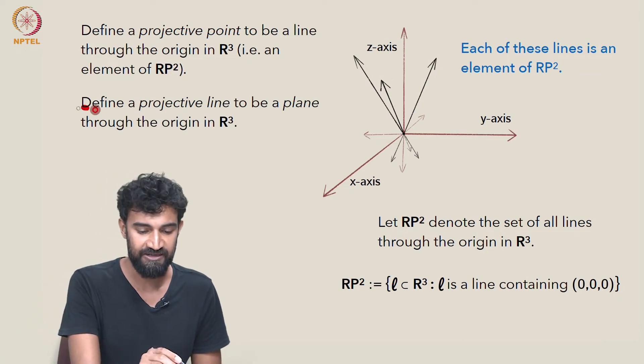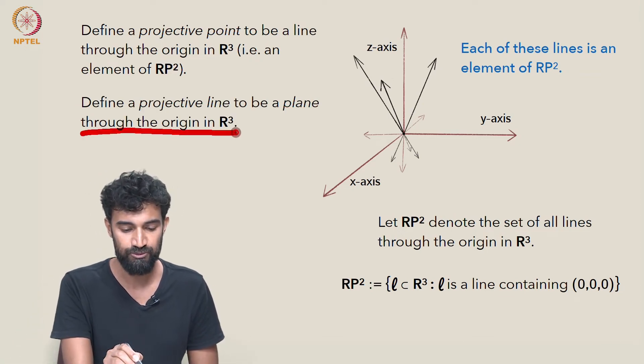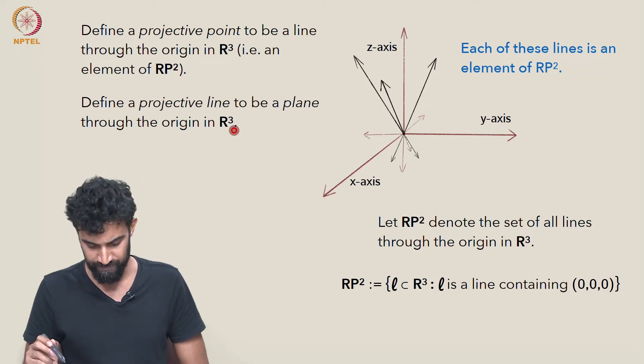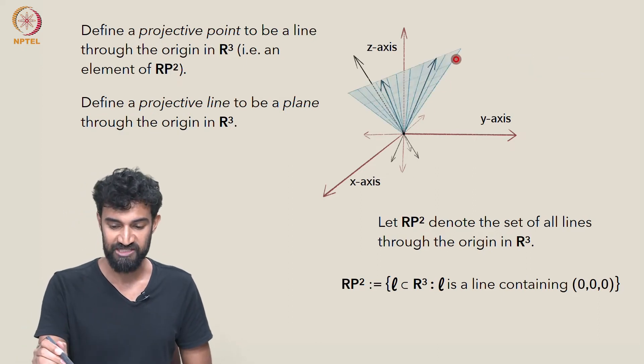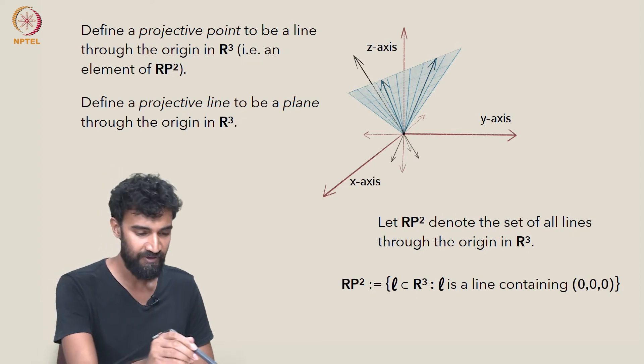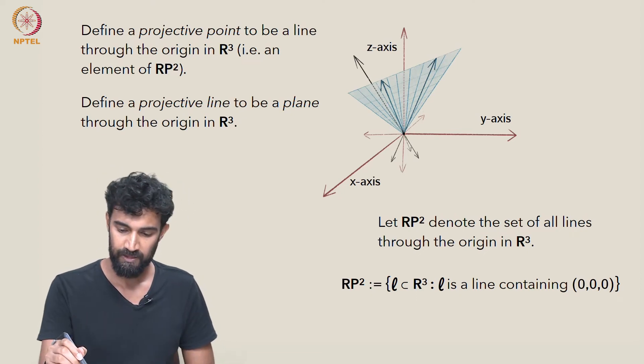And let's define a projective line to be a plane through the origin in R³. So here's an example of a projective line. It's a plane through the origin, but it also consists of a bunch of projective lines.